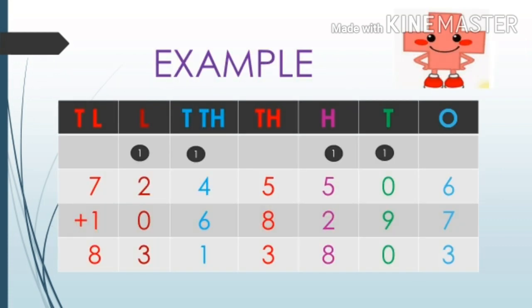Ab in steps ko hum example ki madad se samjhenge. Example mein aap dekh sakte hain ki maine 7245506 aur 1068297 ko add kiya hai. In numbers ko pehle bilkul neatly place value chart mein arrange kiya gaya hai aur uske baad inka addition hua hai.